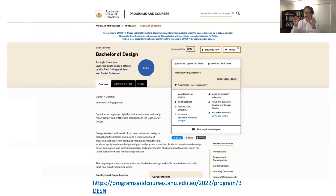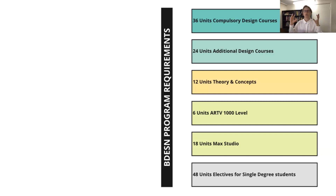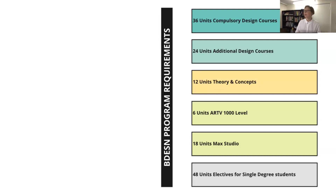For more detail, I recommend looking at the program on the programs and courses page. Briefly, the program has 36 units of compulsory design courses — things like a design history course, a first year course about what contemporary design is, and capstone courses at the end of your degree to shape your own unique portfolio. There are also 12 units of theory and concepts courses reaching across the whole College of Arts and Social Sciences — from anthropology to art history. We also complement the degree by asking you to take art studio courses to keep that hands-on focus.